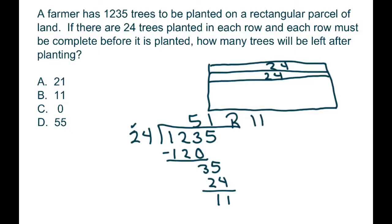And so that's how many trees will be left over after planting—it's 11. You know it can't be 55 because that would be bigger than 24 and you could have started planting another row. That's all, thank you, have a nice day!